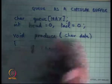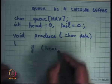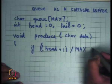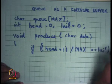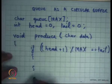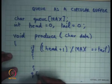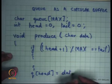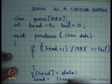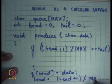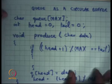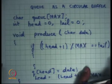The produce function checks if `(head + 1) % max == tail` — if so, the queue is full. Otherwise, it sets `queue[head] = data` and advances `head = (head + 1) % max`. Similarly, a consume function can be written. With a single thread, you return an error when the queue is full or empty.